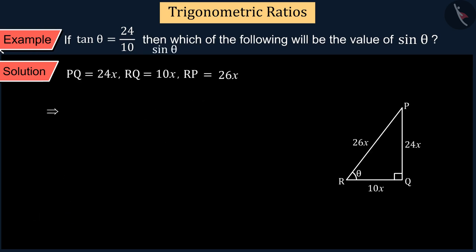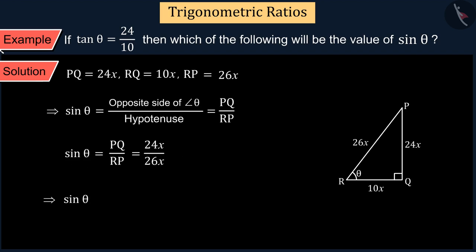We know that the value of sin of the angle is equal to the ratio of the opposite side of the angle to the hypotenuse of the triangle, which gives us PQ upon RP. Putting the value of PQ and RP,